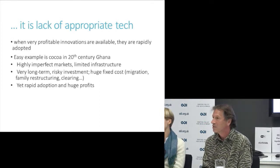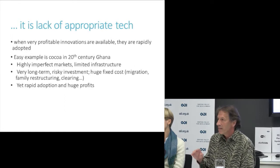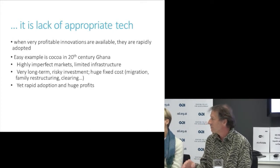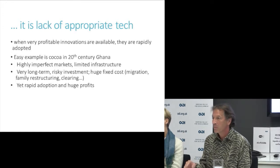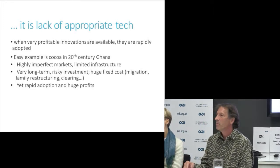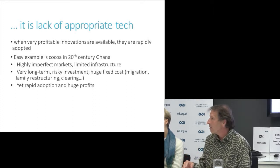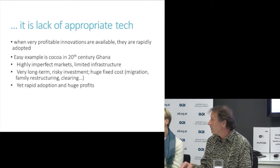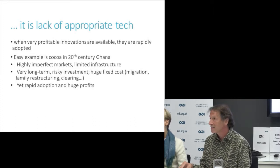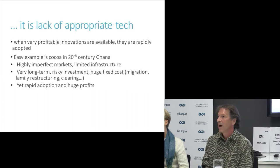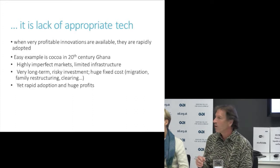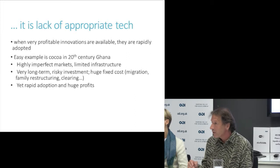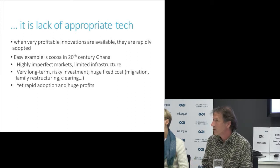Everybody here knows the story. This happened in the early 20th century in Ghana when markets were highly imperfect — financial markets were disastrously imperfect, labor markets were poor, output markets didn't exist when it started. Property rights were as ambiguous as they are now. And this was a very long-term, highly risky investment. You couldn't eat it. It took years, involved huge fixed costs in multiple dimensions — migration, restructuring families, creating new towns, clearing forests. And yet we saw very rapid adoption and enormous profits being generated.